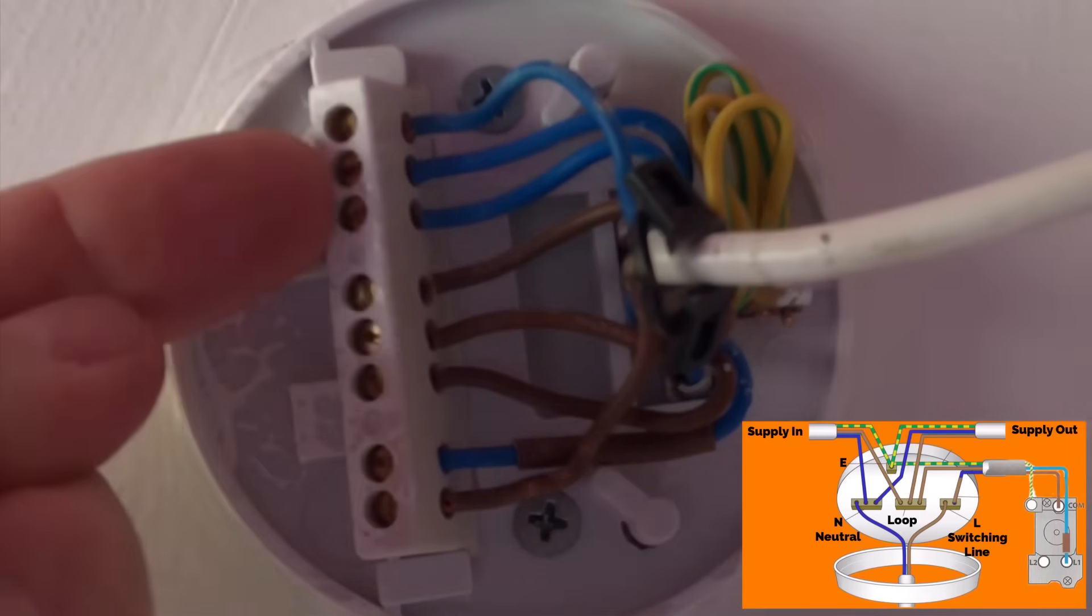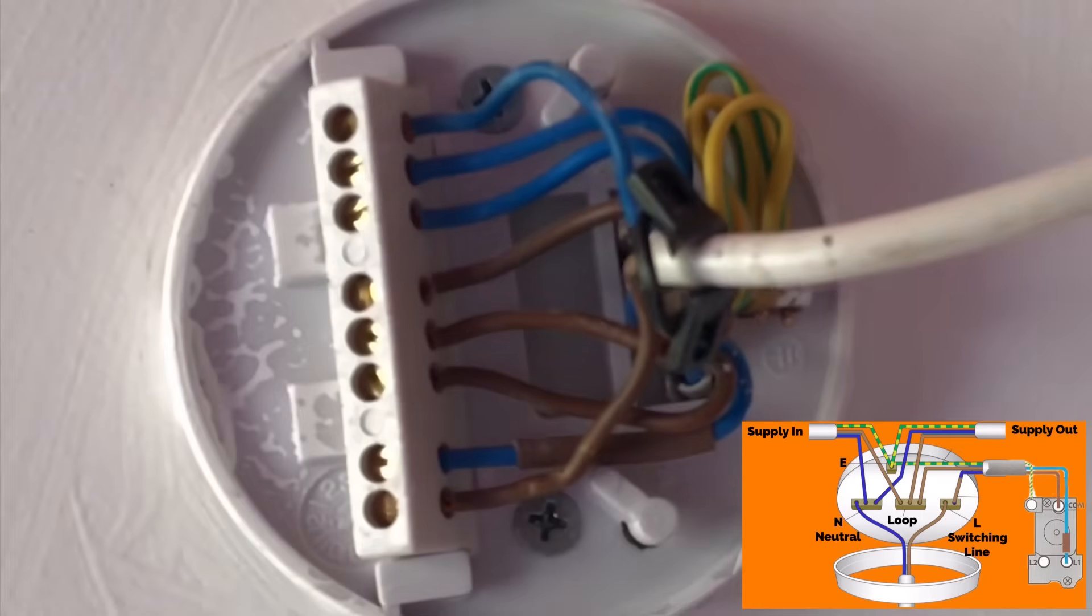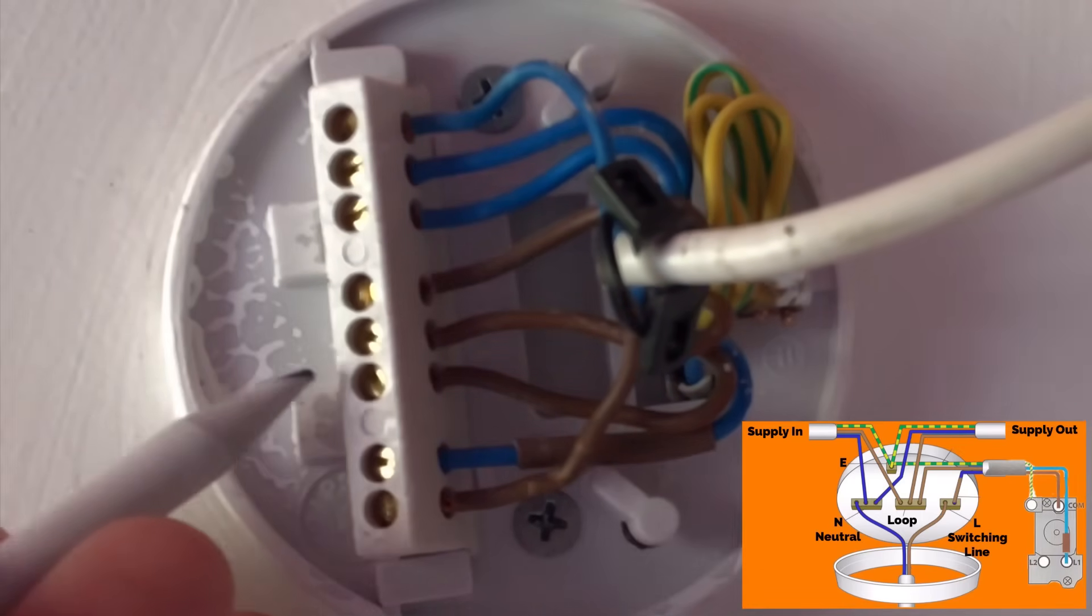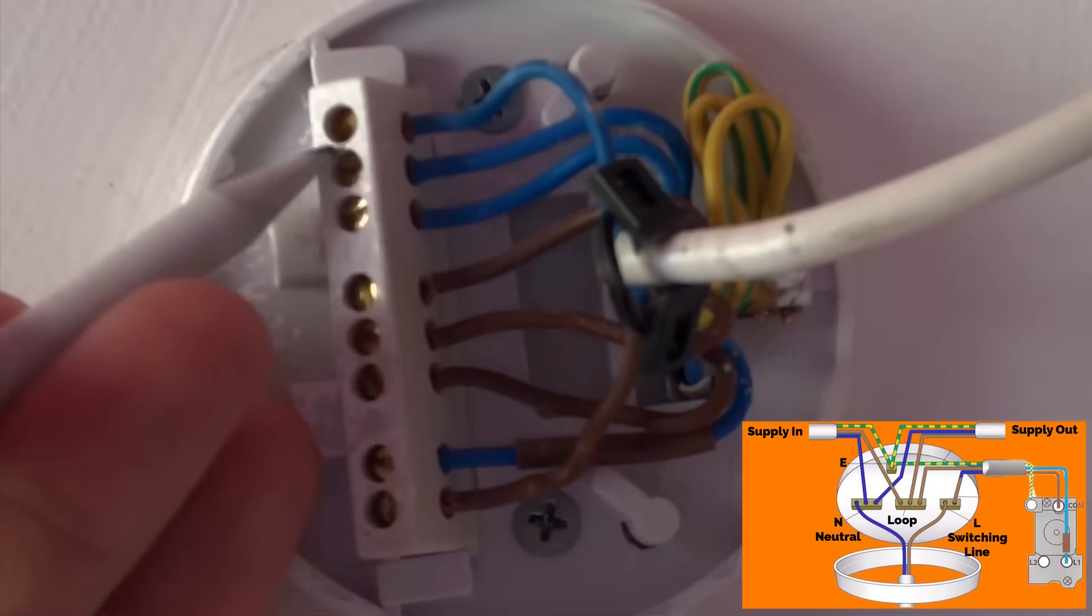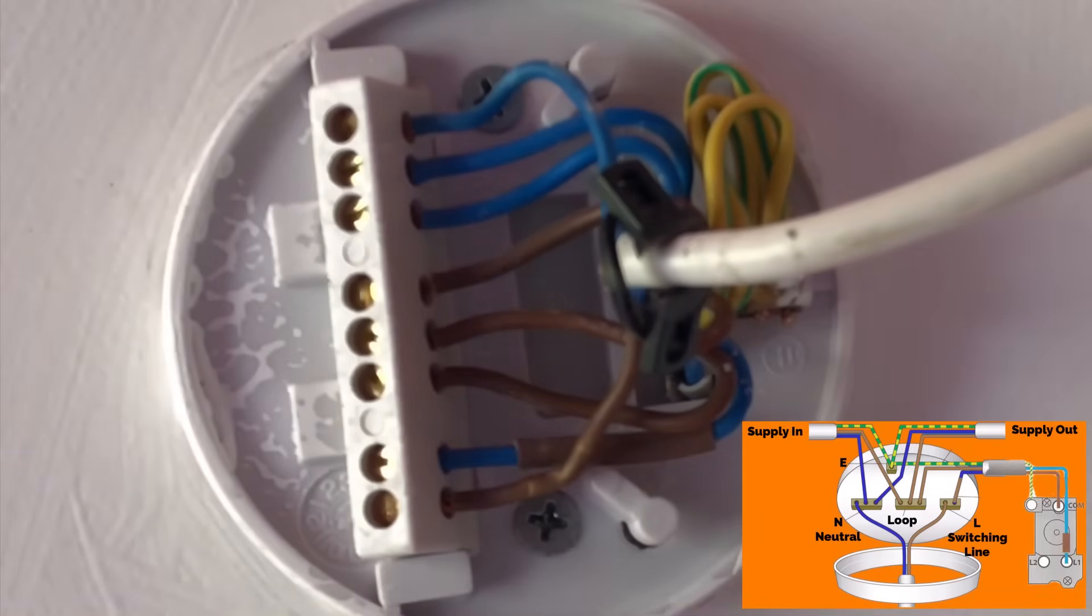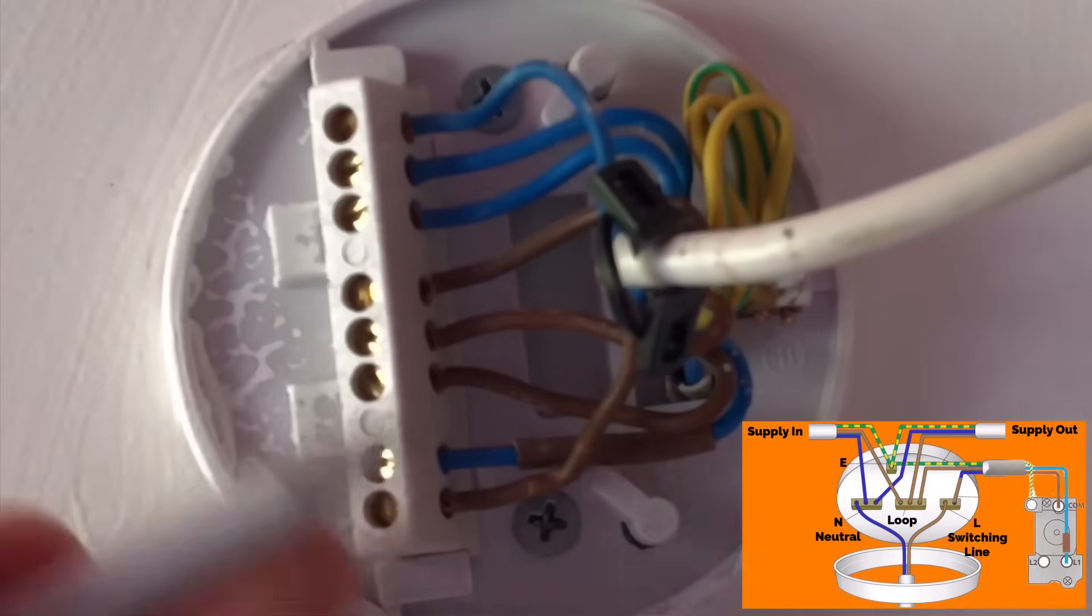We've then got a cable which is a permanent line and a neutral going out to the next room. So again, permanent line out the loop and a neutral out the neutral block.